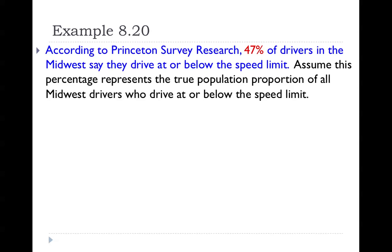Example 8.20. According to Princeton survey research, 47% of drivers in the Midwest say they drive at or below the speed limit. Assume this percentage represents the true population proportion of all Midwest drivers who drive at or below the speed limit. So we have 47%, and that is the population proportion. We're going to express that as 0.47 in our calculations.